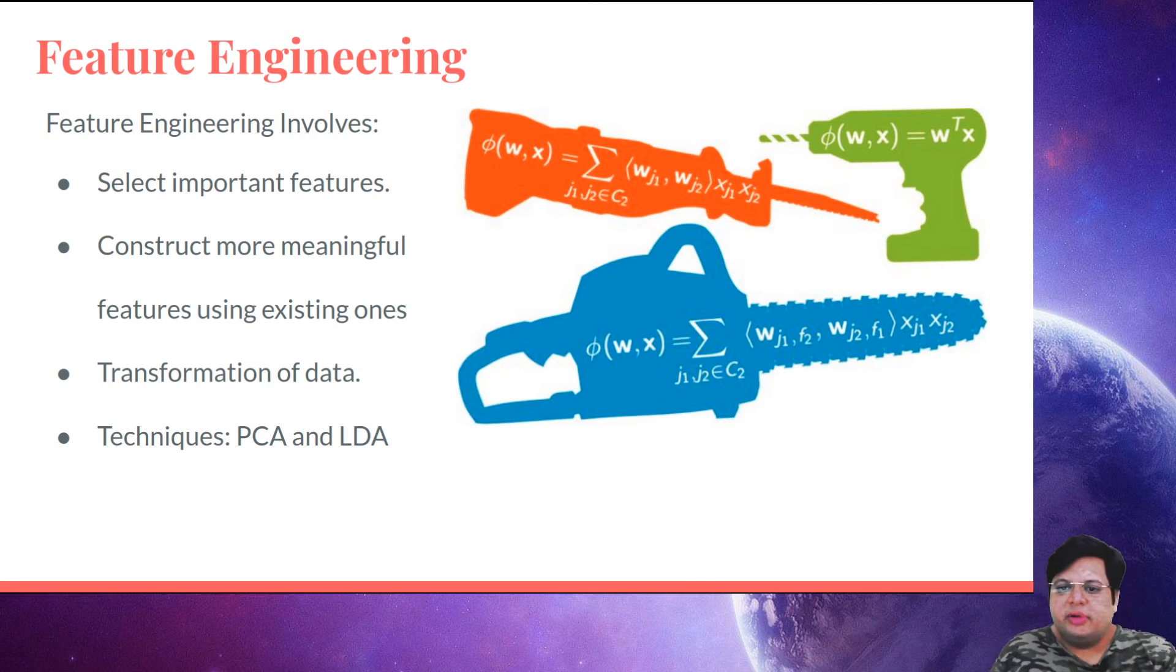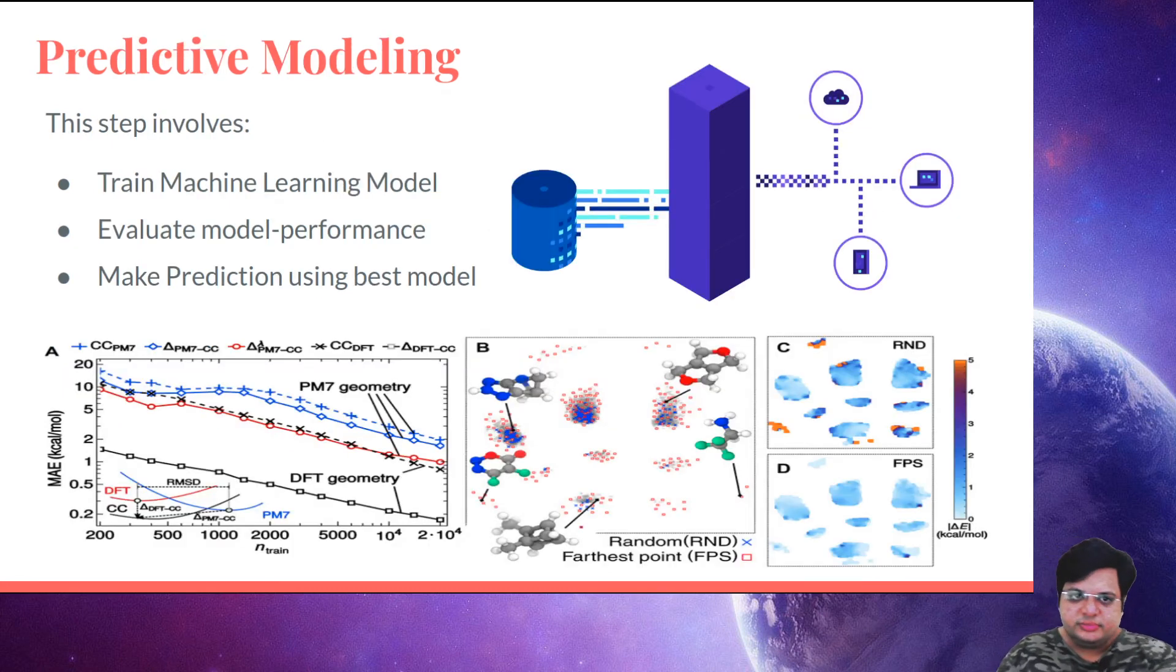We also need to remove columns which aren't helpful for making the model. That's called dimensionality reduction. There are two major methods: PCA and LDA. We'll read about these in depth while going through these steps.